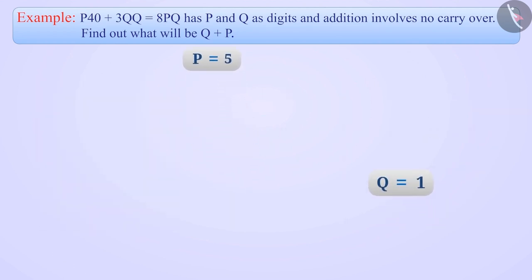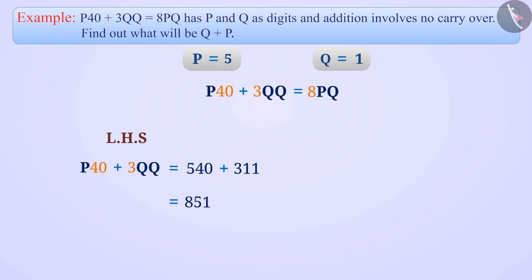Let p equal 5 and q equal 1. See if p40 plus 3qq equals 8pq. 540 plus 311 equals 851, and 8pq equals 851. Both sides are equal, so we can say that we have obtained the correct values of p and q.